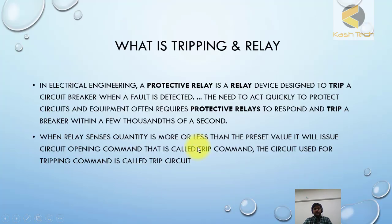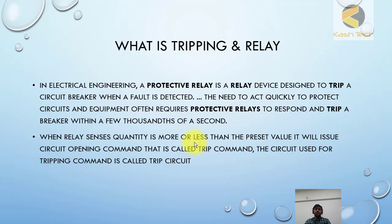What is tripping and what is a tripping relay? In electrical engineering, a protective relay is a relay device designed to trip a circuit breaker when a fault is detected. The need to act quickly to protect circuits and equipment often requires protective relays to respond and trip a breaker within a few thousands of seconds or milliseconds. When the relay's sensed quantity is more or less than the preset value, it will issue a circuit opening command — that is called a trip command. The circuit used for the tripping command is called the trip circuit.